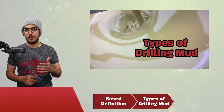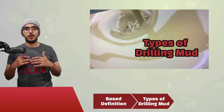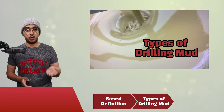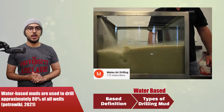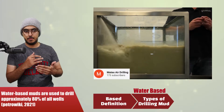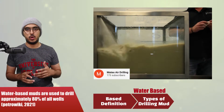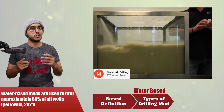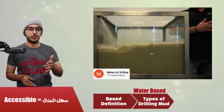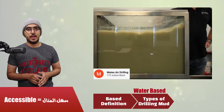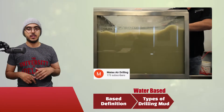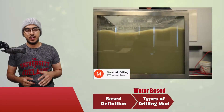Now let's start talking about the most commonly used type of drilling muds, which is water-based mud. The most obvious reason is that water is the most accessible fluid compared to oil and gas, and also it's the cheapest, so it's more cost-efficient to use it.